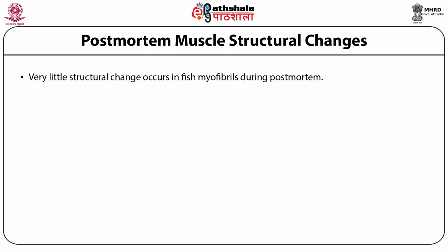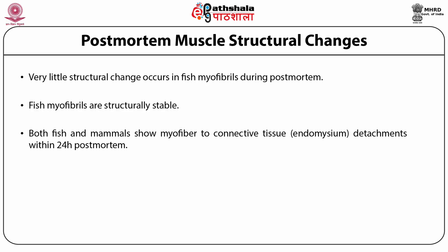Beef and sheep structural changes are well characterized and show significant breaks in the I-band and costameres after seven days of storage. In marked contrast, fish I-bands are almost never broken. The cytoskeletal proteins of fish and mammals are degraded within days of post-mortem. It is surprising that fish myofibrils are structurally stable; therefore mechanical disruption is required to demonstrate the fragility of fish myofibers. Quantification of these breaks demonstrates that they are associated with fish fillet texture and probably account for much of the early texture changes.